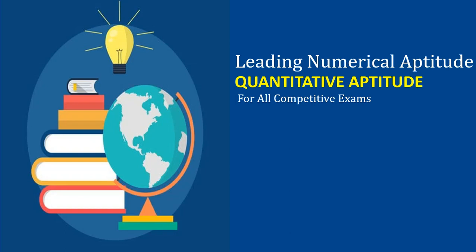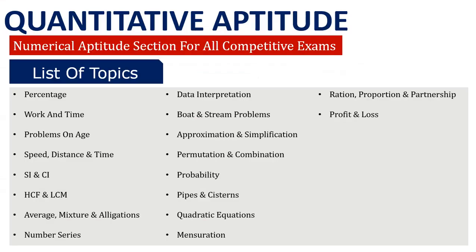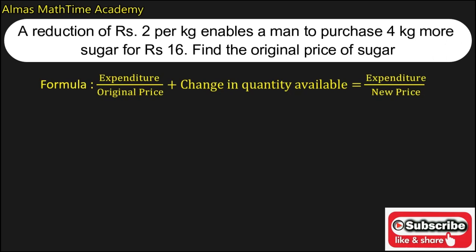Hello everyone, welcome to my channel Leading Numerical Aptitude. My name is Almas and you people are watching my YouTube channel where I'll be uploading videos for aptitude classes for all competitive exams. A reduction of rupees 2 per kg enables a man to purchase 4 kg more sugar for rupees 16. Find the original price of sugar.